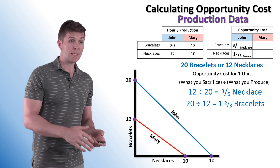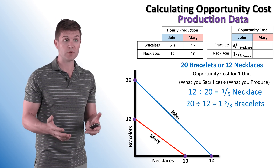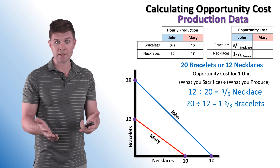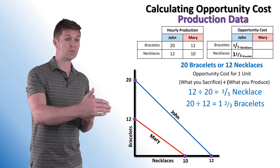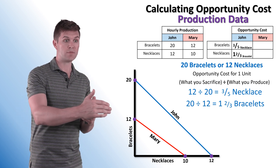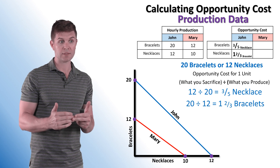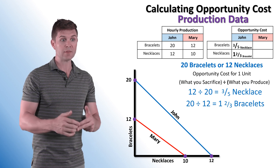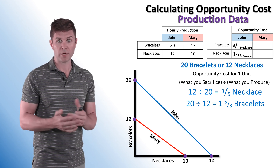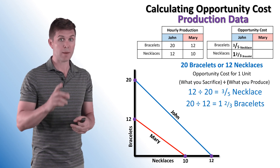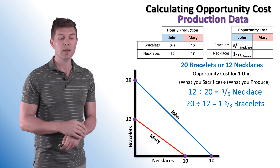Inversely, if we want to find the opportunity cost of producing a necklace, we take what we're sacrificing — the 20 bracelets — divided by 12, what we're producing in necklaces. That comes out to be one and two-thirds bracelets. So the opportunity cost of one necklace is one and two-thirds bracelets.